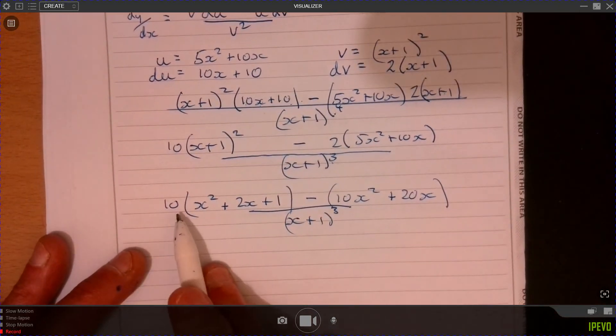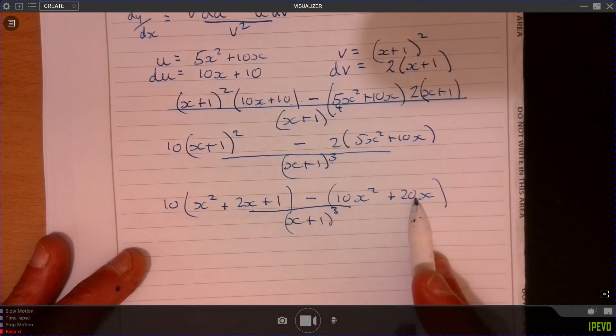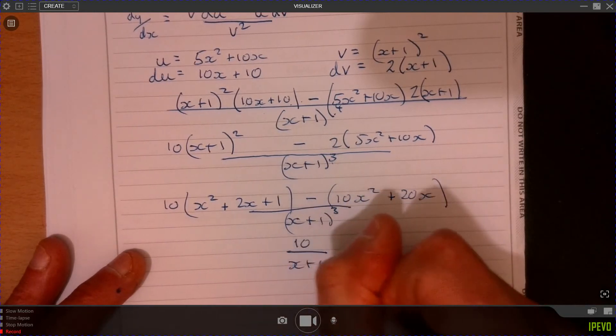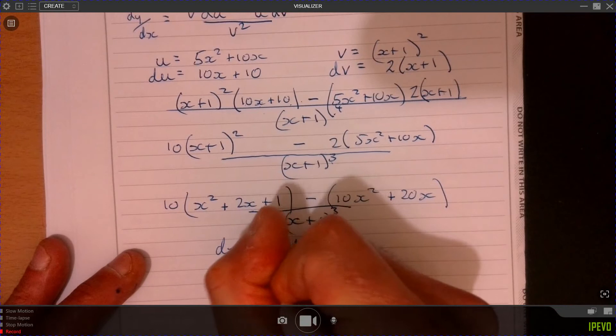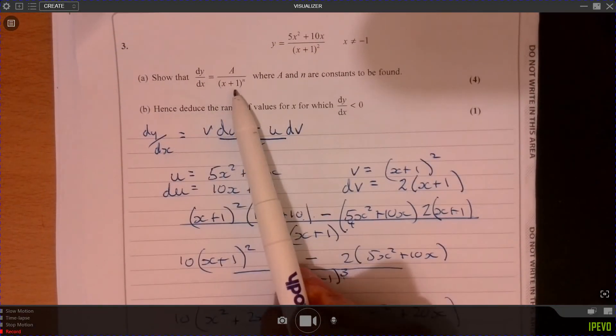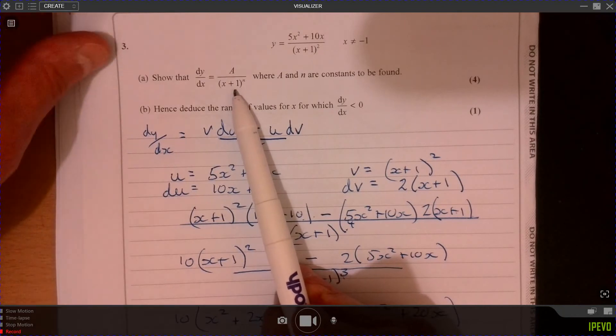OK, we're nearly there. Let's have a look to see what's going to happen at the top. We're going to get 10x squared, take away 10x squared. We're going to get 20x, take away 20x. So it's just going to leave me with 10 over x plus 1 cubed. So that's what dy over dx is. And just have a look at where it wanted me to get to. Yes, that makes sense. I'm happy with that.